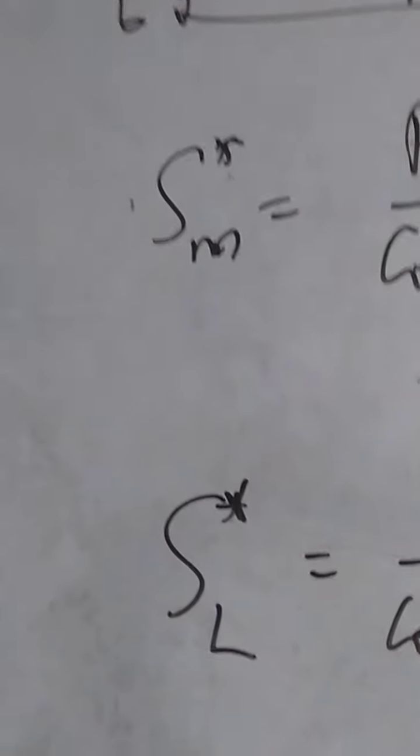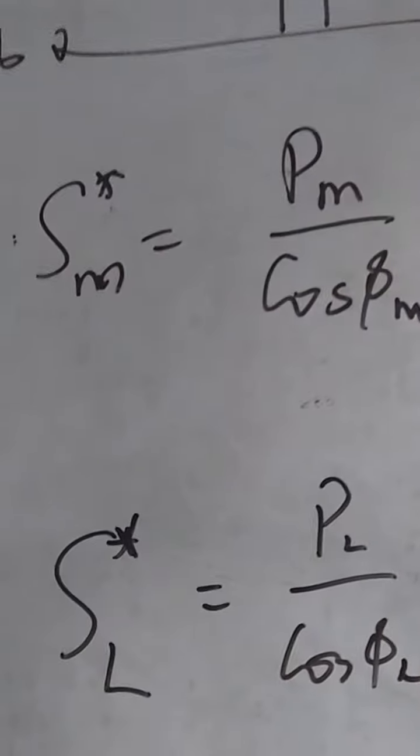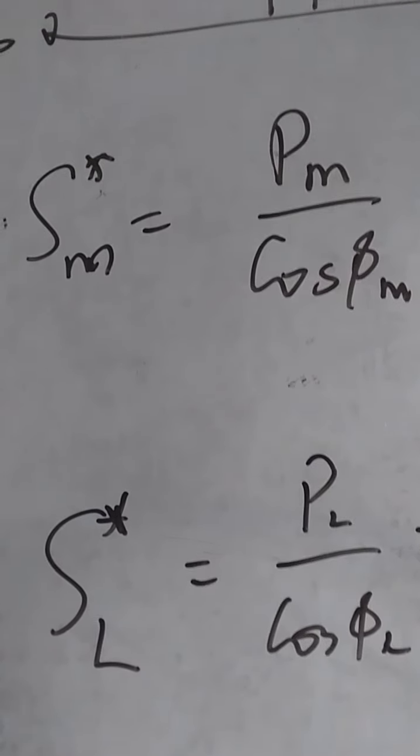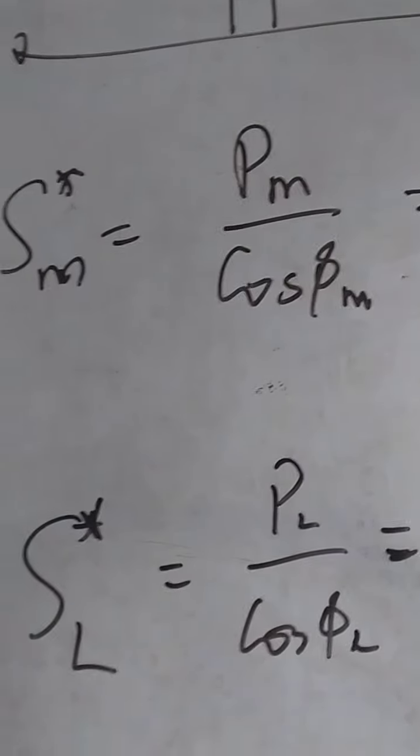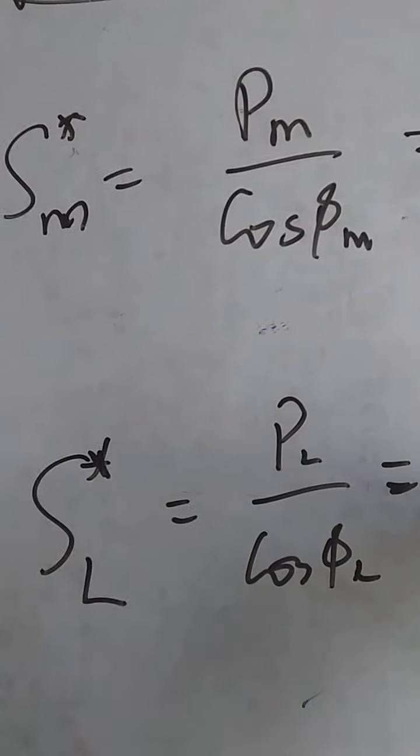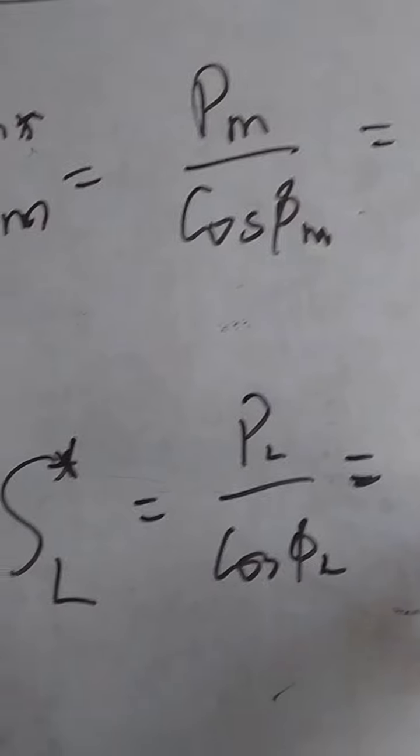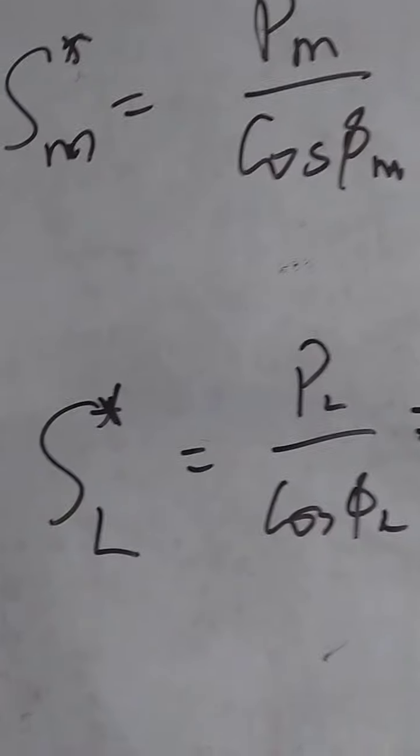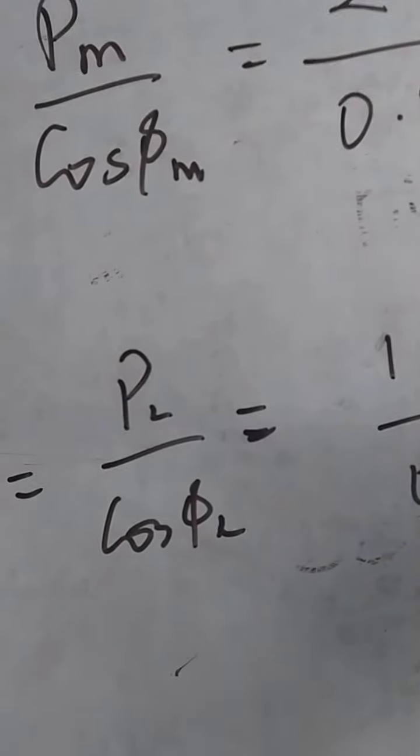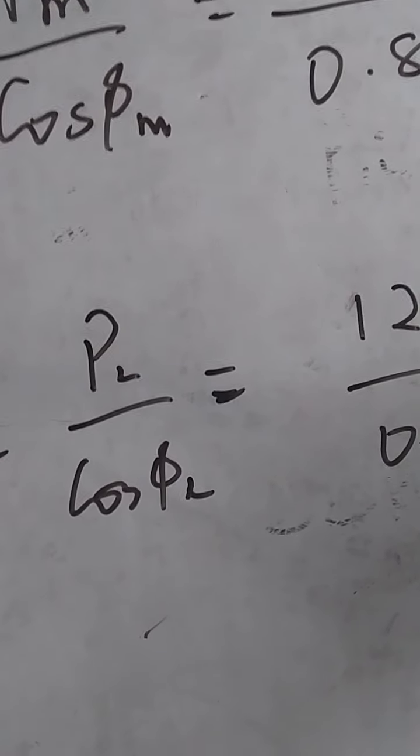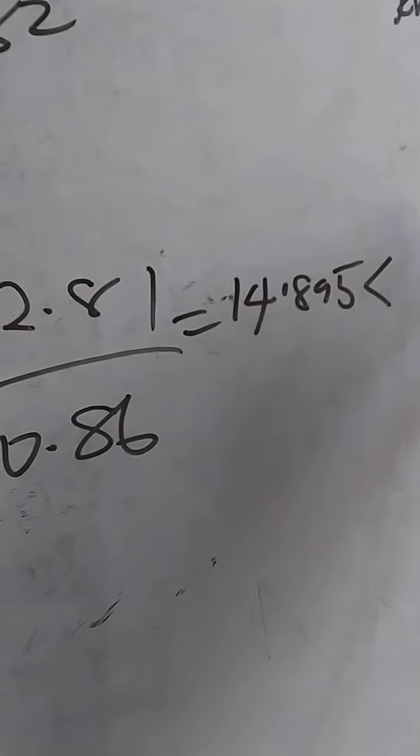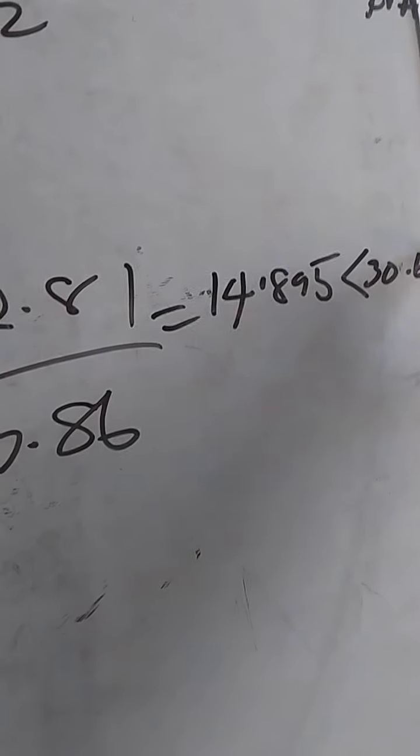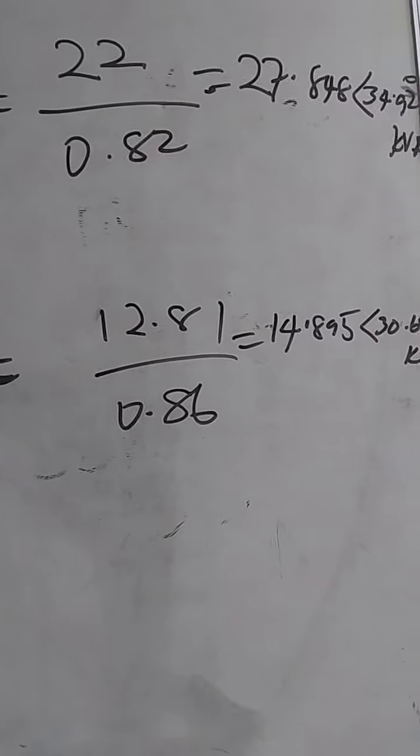The input into that one is 12.81, that is the power that is drawn by that load. So, that will be 12.81 over the power factor as given 0.86. This will give you the capacity of that load to be 14.895 at angle 30.68 degrees KVA. So, that is the capacity of that.